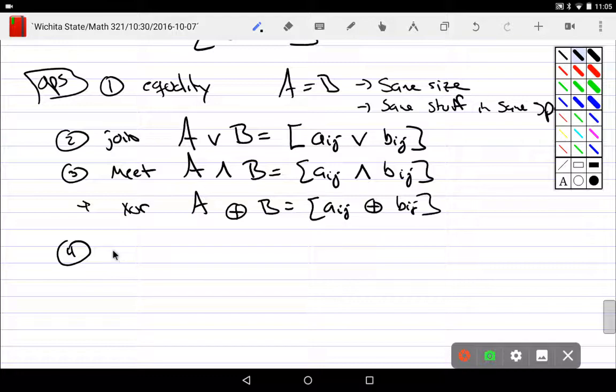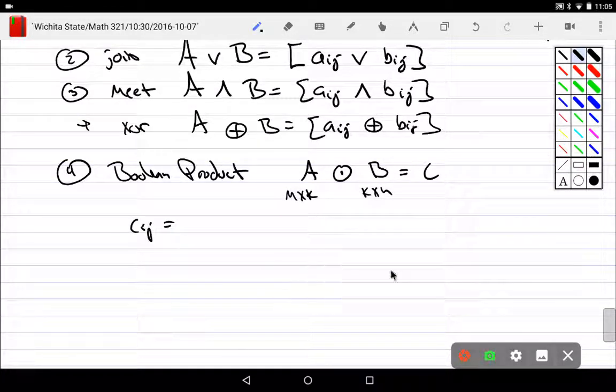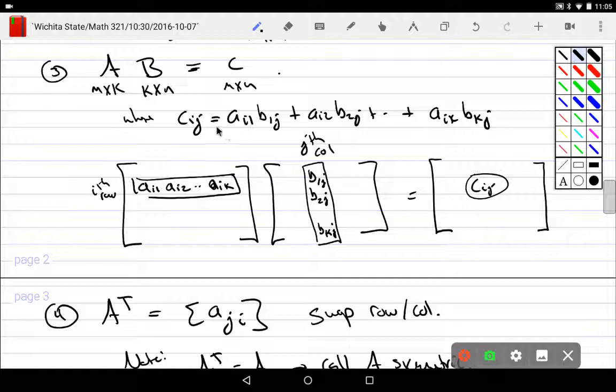But on the other hand, we have the Boolean product. For the Boolean product, where we have A, this is O dot B, is going to make a C. Where this is, say, M by K, this is K by N. And it does the same thing product-wise. Where we do, like up here, where I took this row and this column. Where I took times plus, times plus, plus times. We go through that and we multiply the same positions. That's the scalar. Except what we're going to do is take this row and column in the exact same way. But instead of times, we are going to use AND. Instead of plus, we're going to use OR.